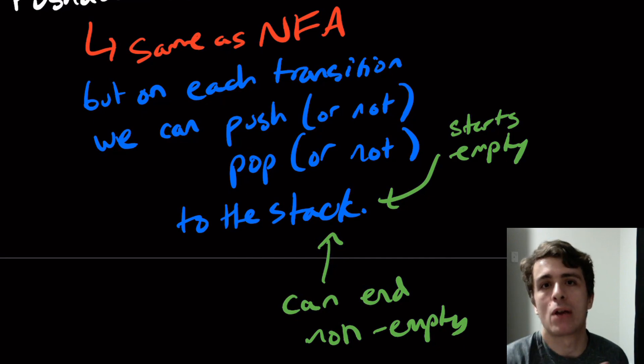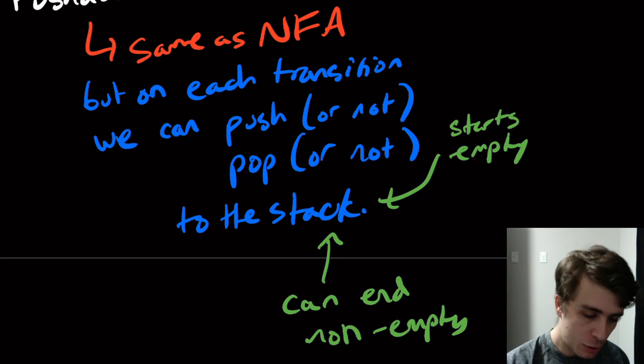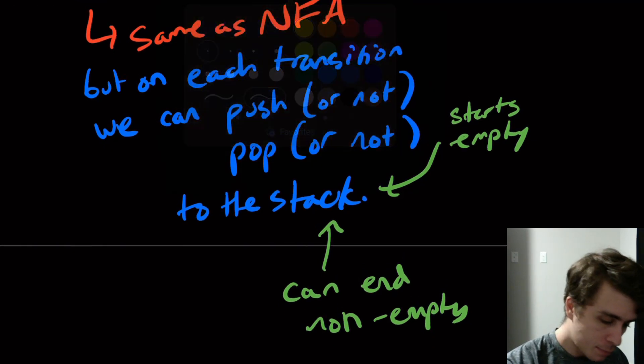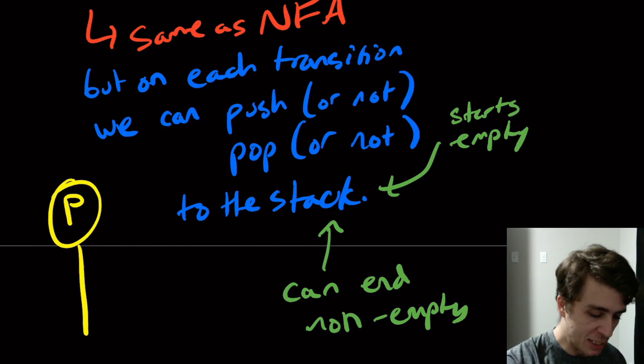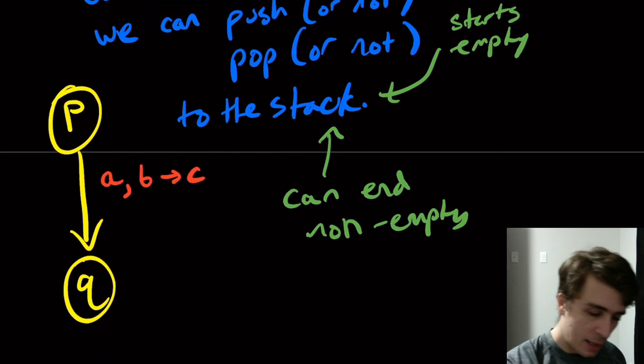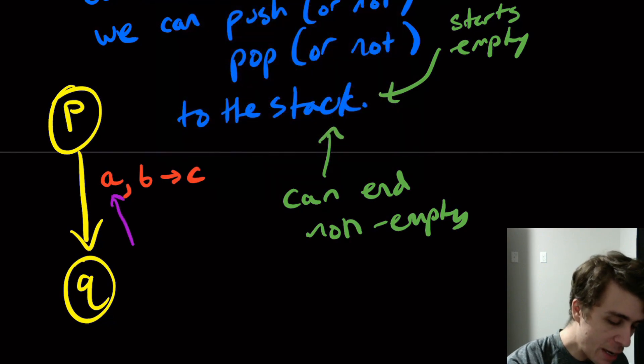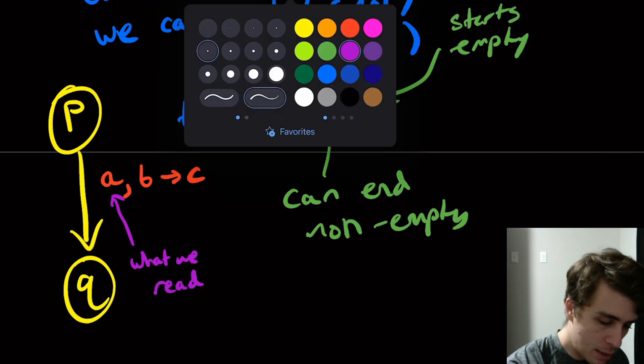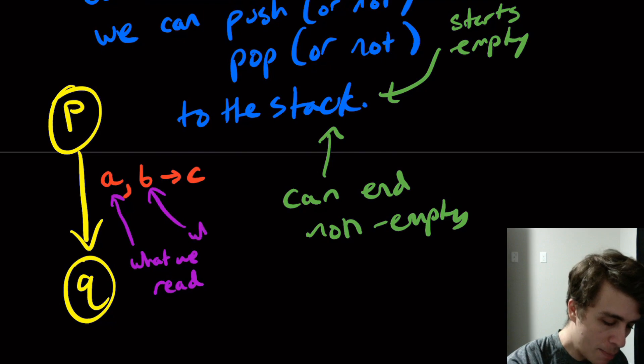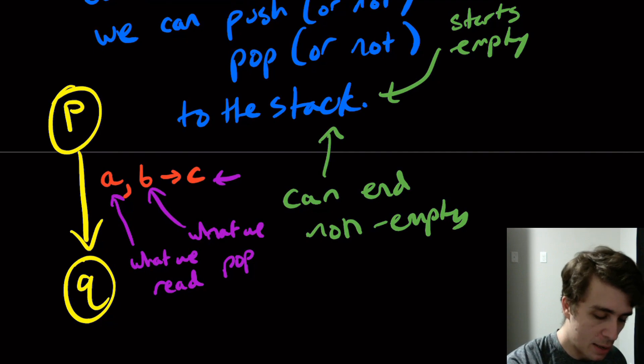Okay, so how are the transitions going to look? We're going to have transitions that look like this. Let's say state P to state Q. Here's what the transition is going to look like: it's going to look something like this: a, b arrow c. What do each of these mean? The a here means what we read. The b here is what we pop. And the c here is what we push. Actually I'm just going to simplify this to say read, pop, push.